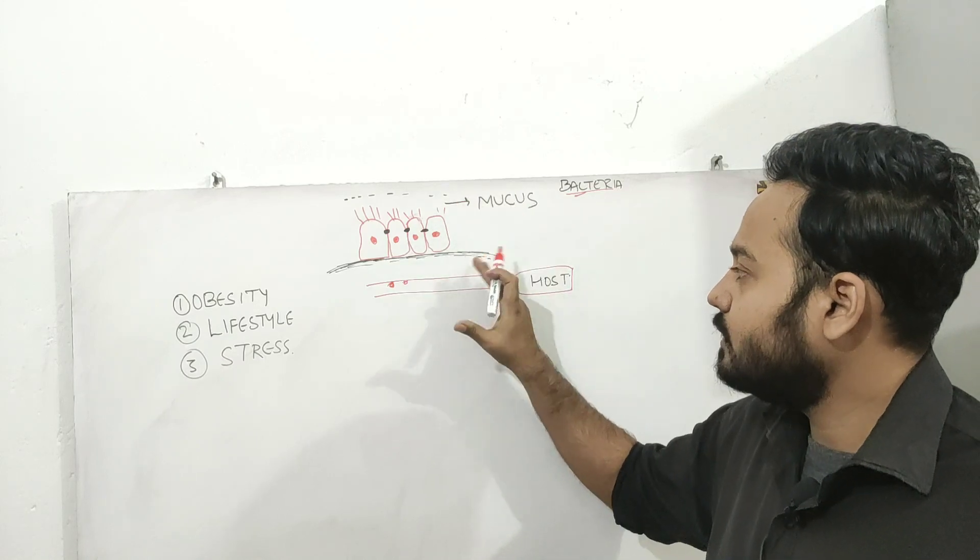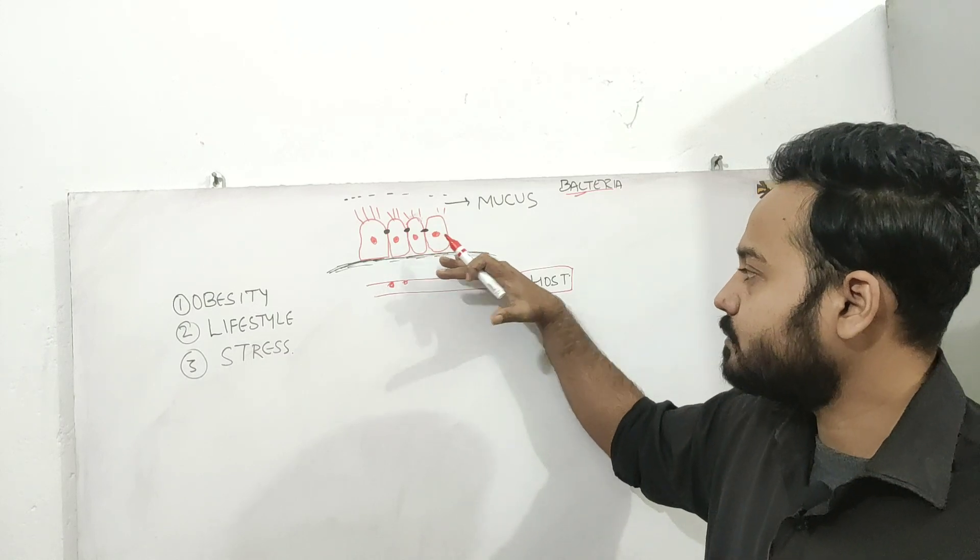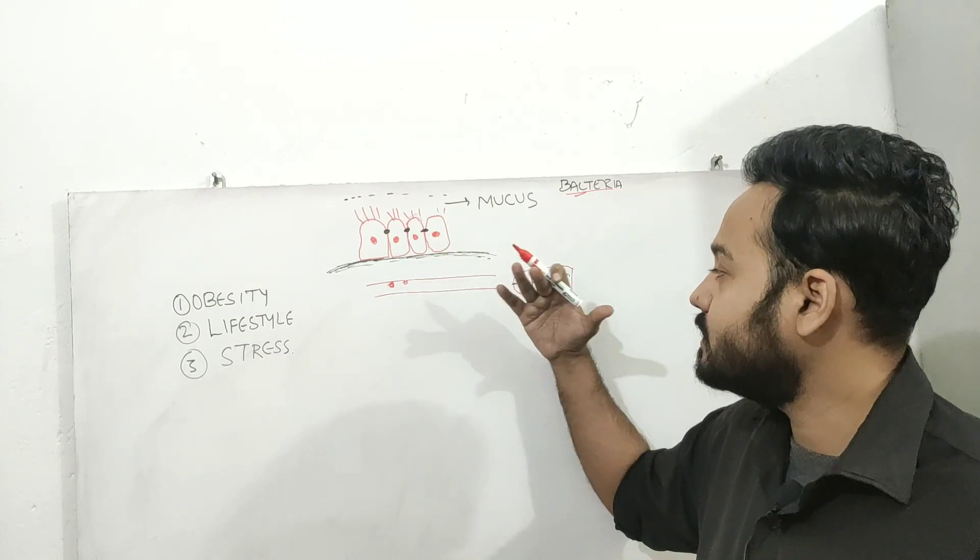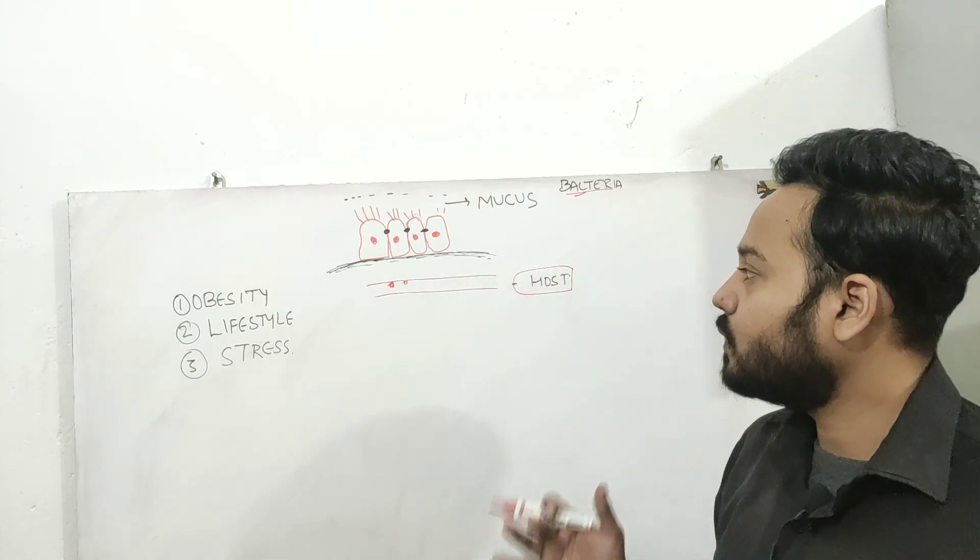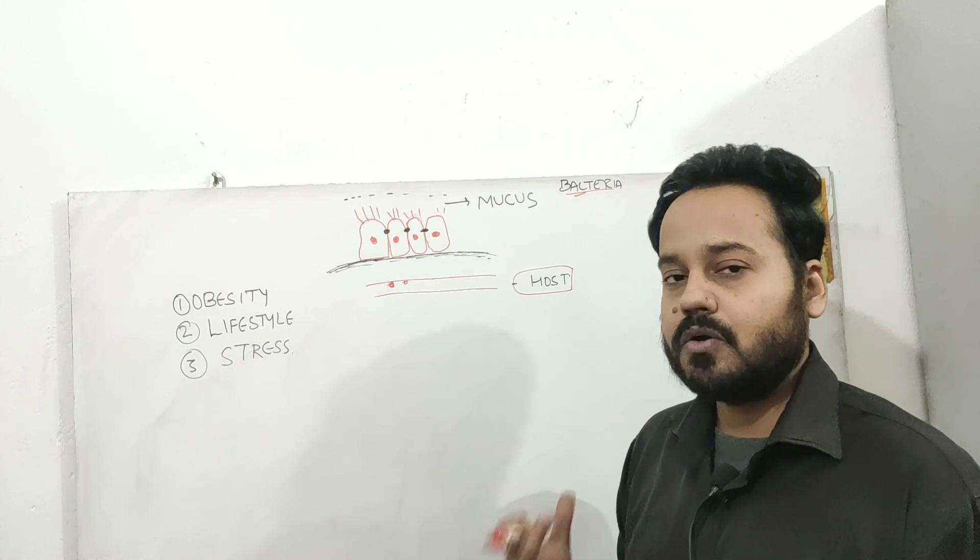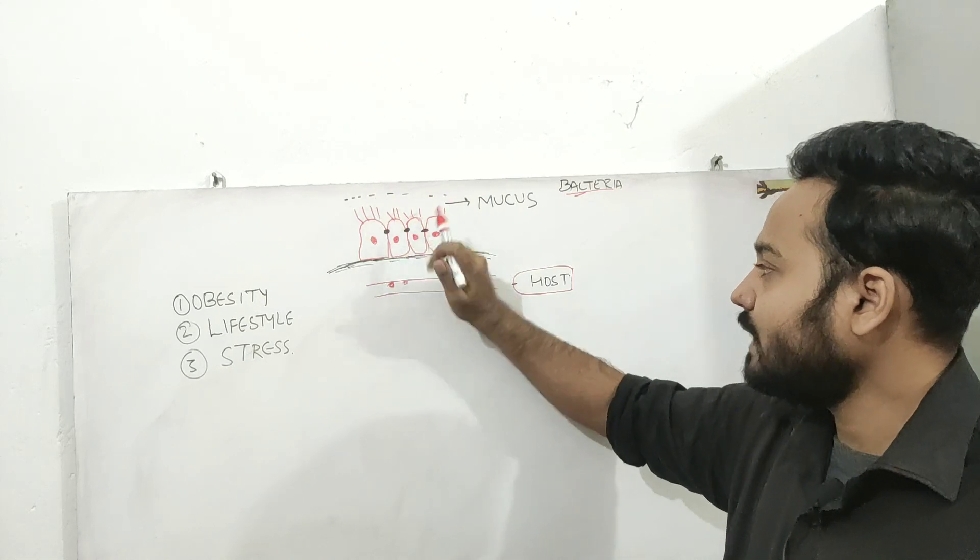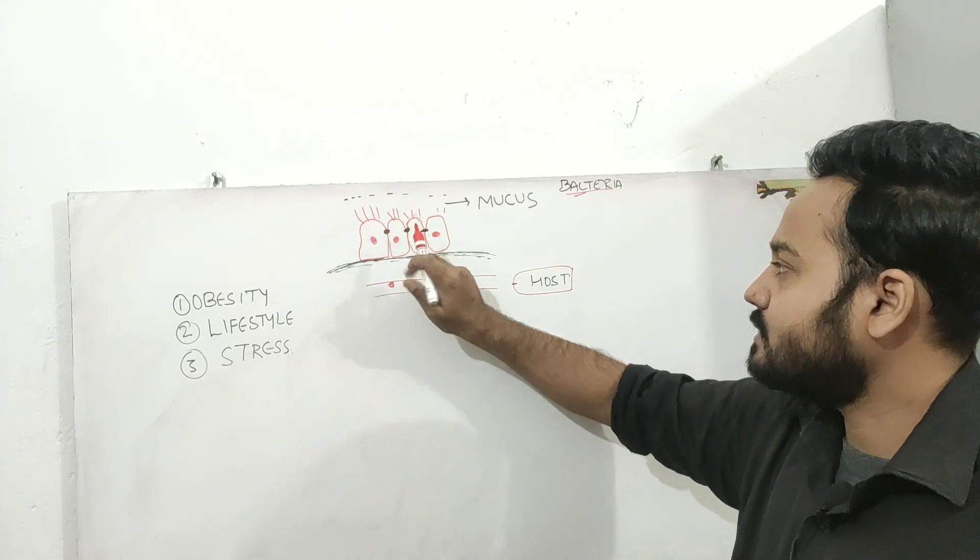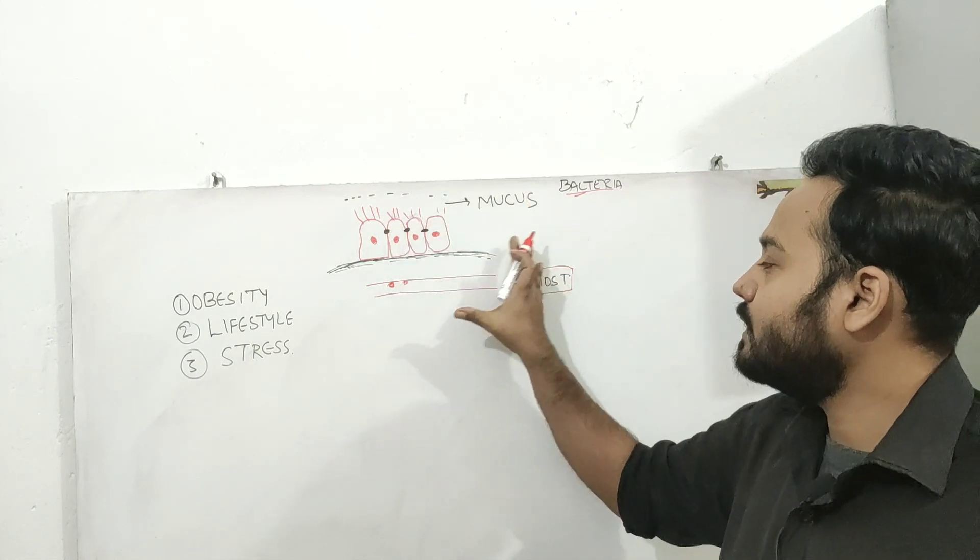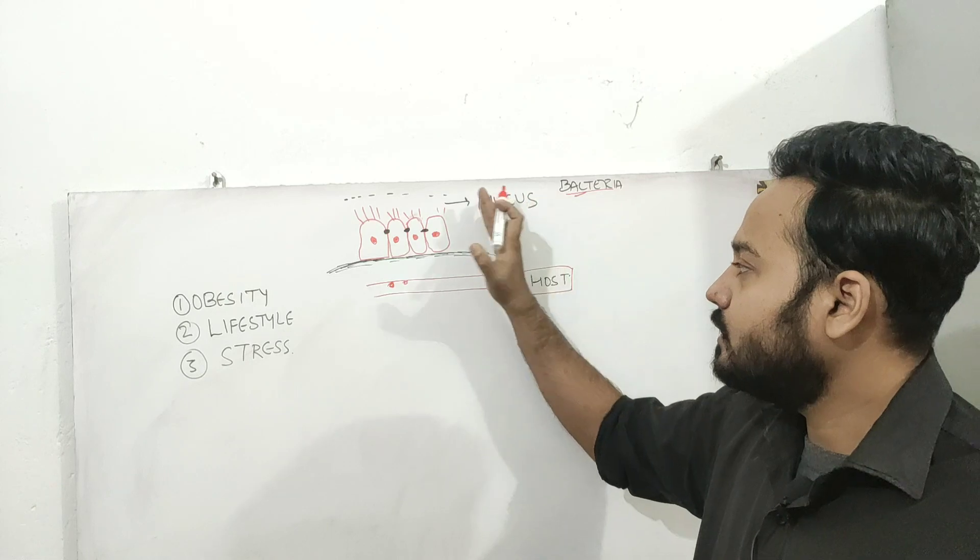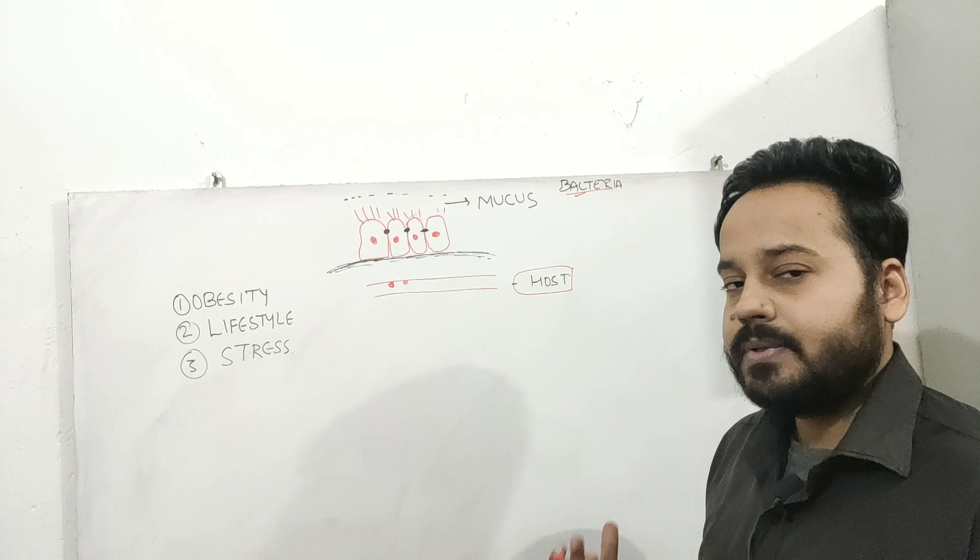So if you see the protective layers that are in intestinal barrier and how it keeps certain pathogens, certain antigens from entering into the bloodstream, you will understand how it can be very important to prevent autoimmune disorders. So there is a protective mucus and these are your enterocytes and these are the villi and these are tight junctions.